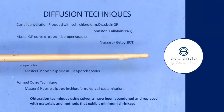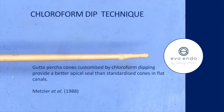The chloroform dip or diffusion technique: you modify the tip of a master cone by dipping it in chloroform and allowing it to take the shape of the apical core and existing apex anatomy. Now obturation techniques using solvents have been abandoned and replaced with materials and methods exhibiting minimum shrinkage. We no longer use this — chloroform has been found to be carcinogenic or cytotoxic.